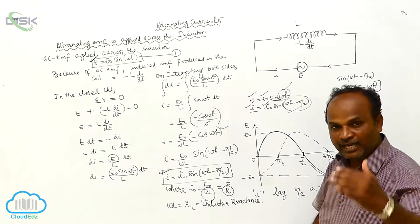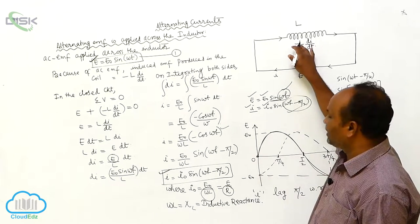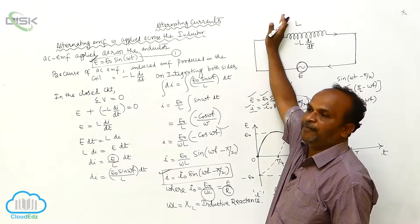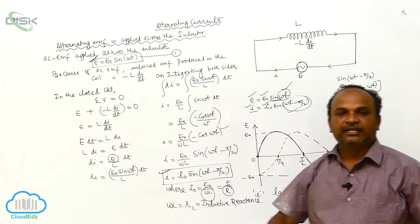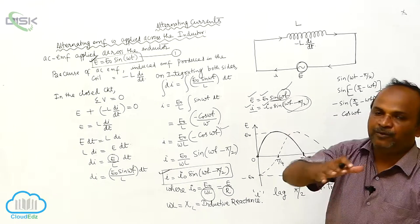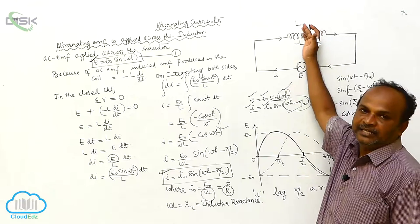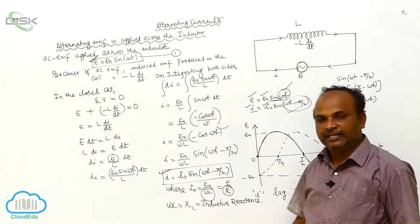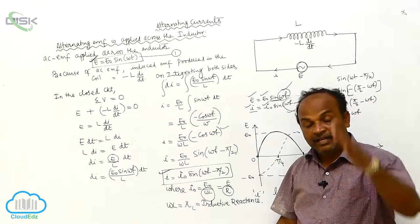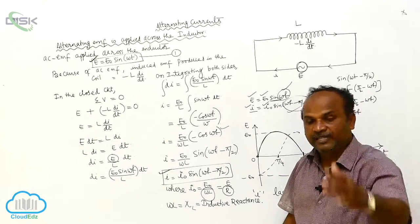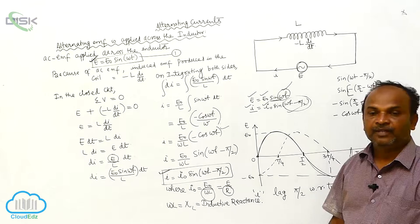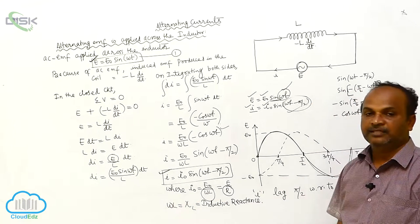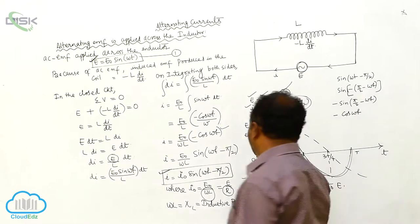The resistance offered by the inductor to the flow of current is called inductive reactance. This is the inductor, and this is the AC EMF. The AC current is opposed by the inductor. Therefore, the resistance offered by the inductor is called inductive reactance. XL is equal to ωL.